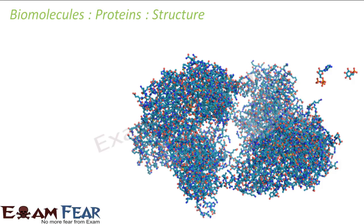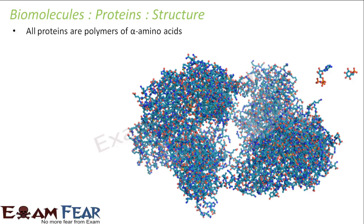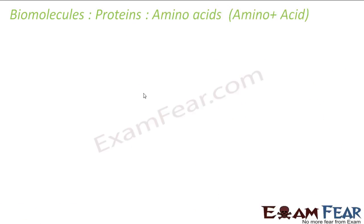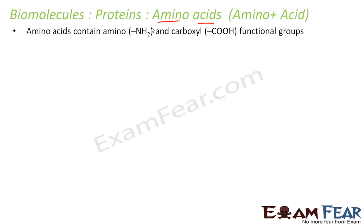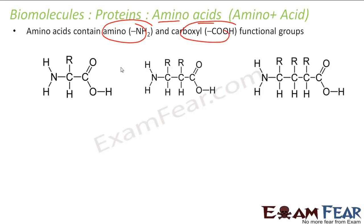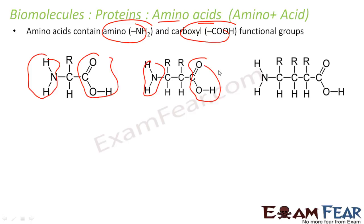To understand proteins, chemists have broken them down into amino acids — specifically alpha amino acids. These proteins are made up of alpha amino acids. An amino acid, as the name suggests, has an amino group (NH2) and an acid group (COOH).